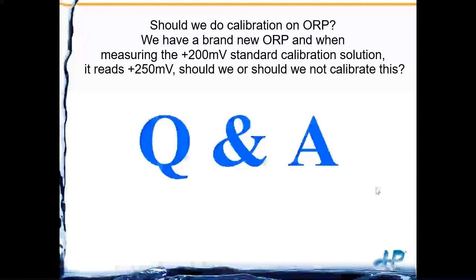Question: should we calibrate ORP? We have a brand new ORP probe — measuring a 200 millivolt standard calibration solution it reads 250. Should we calibrate? Since that's 50 millivolts outside the plus or minus 30 millivolt range, yes, it's good practice to calibrate. Also important: if you use a combination electrode measuring pH and ORP simultaneously, doing a pH calibration will affect the zero offset for your ORP value — check with your electronics supplier about this.